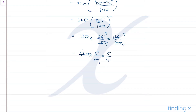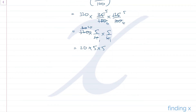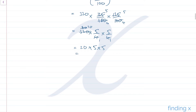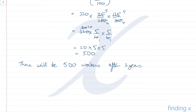Continuing: 320 × 5/4 × 5/4. Cancelling 4s into 320 gives 80 × 5 × 5/4, then simplifying further: 20 × 5 × 5 = 25 × 20 = 500. In conclusion, there will be 500 workers after 2 years.